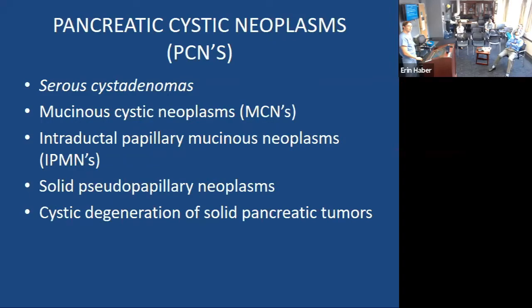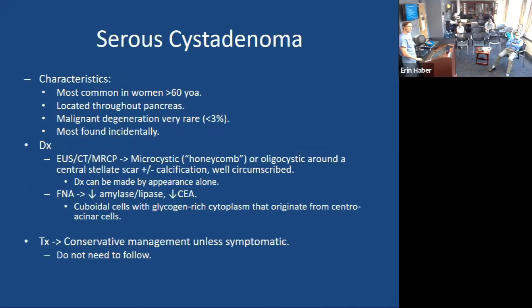Getting into the meat of it — cystic neoplasms. We make a big deal about them because a certain number can progress. At this point we're not very sophisticated in our ability to identify which ones, other than following them every few months, taking fluid from them, and performing MRCPs to see if they're growing or developing high-risk features.